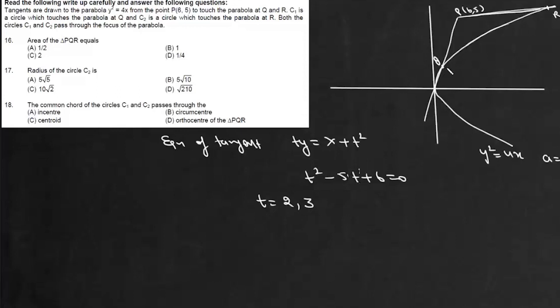The coordinate of point Q, corresponding to t = 2, is (at², 2at) = (4, 4), and for point R with t = 3 it is (9, 6). So the two points of contact are Q(4, 4) and R(9, 6).